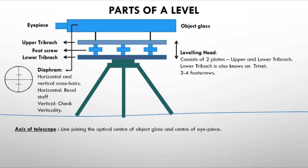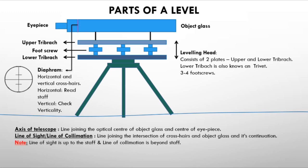The line joining the optical center of the object glass and the center of the eyepiece is the axis of the telescope. The line of sight, or line of collimation, is defined as the line joining the intersection of the crosshairs and the optical center of the object glass, and its continuation. This is a very important definition.